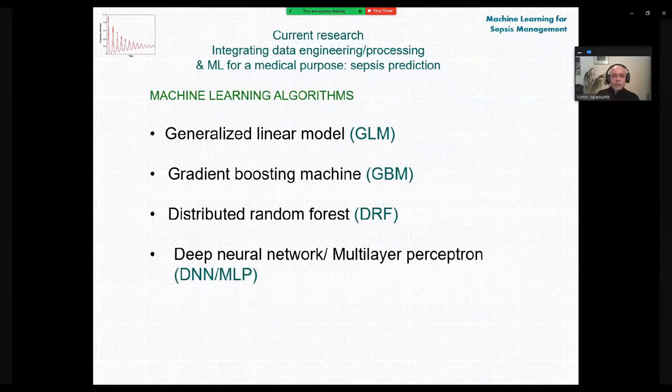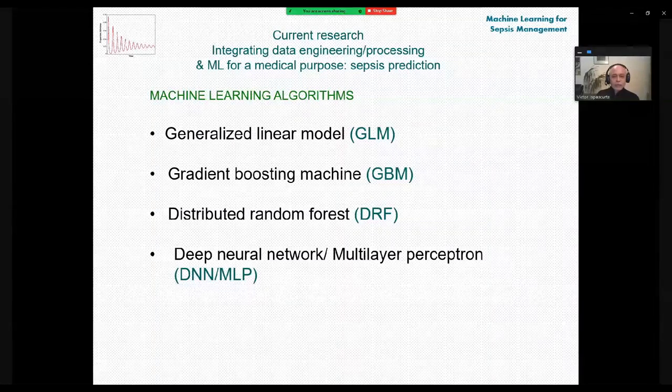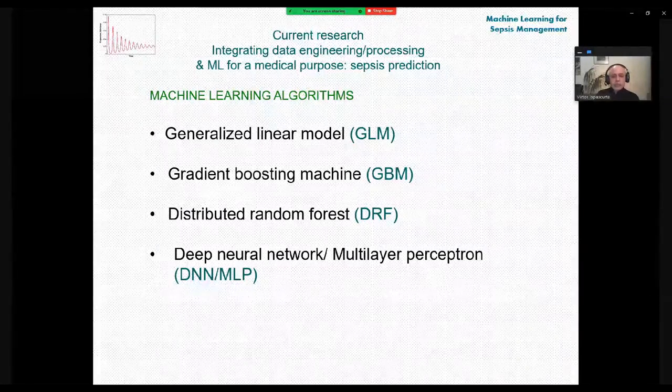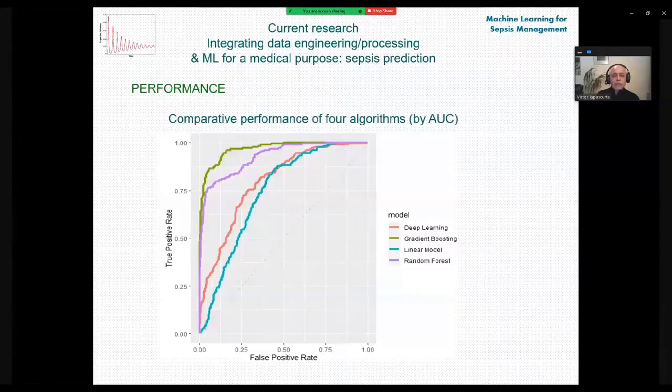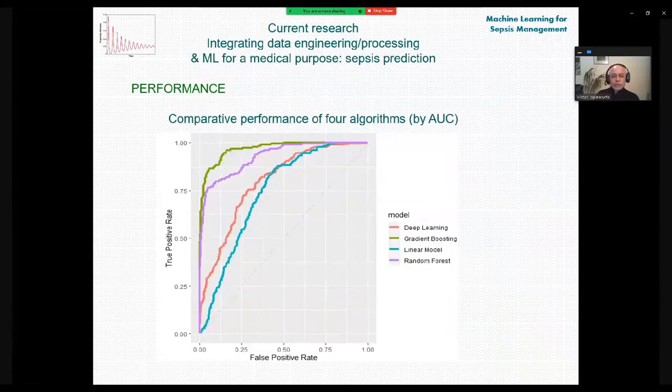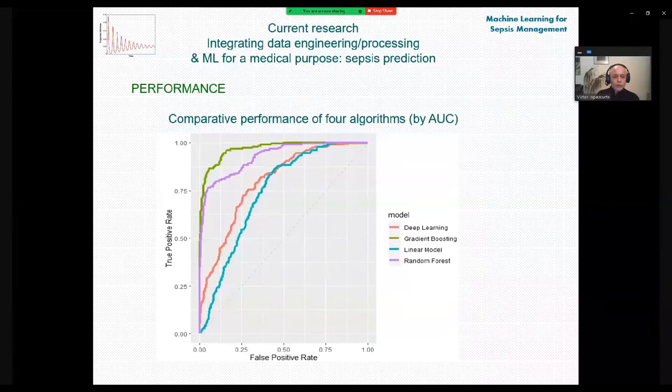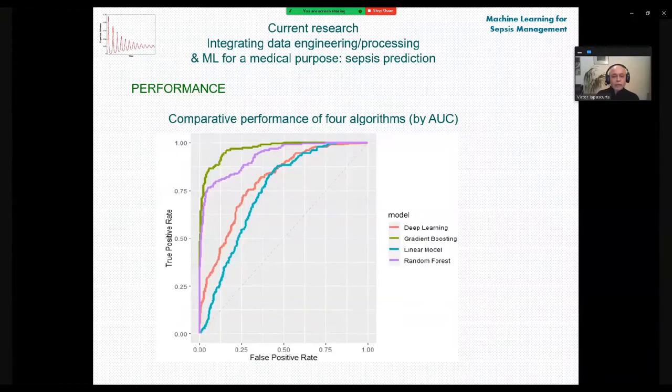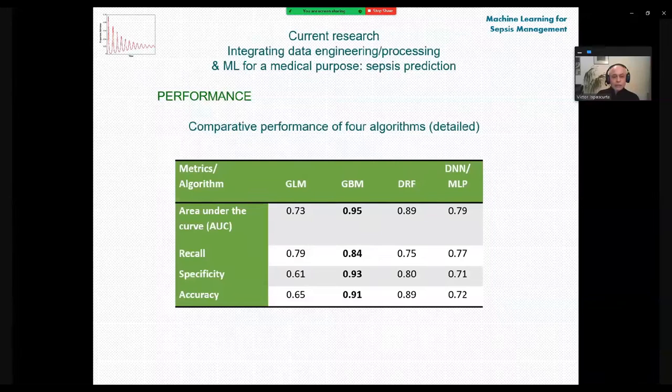And this, the same set is passed to four machine learning algorithms, namely generalized linear model, gradient boosting machine, distributed random forest and neural network as multi-layer perceptron. On the screen, you can see the comparative performance of our algorithm by area under the curve and the lower performance is shown by the linear model and the highest one by the gradient boosting machine.